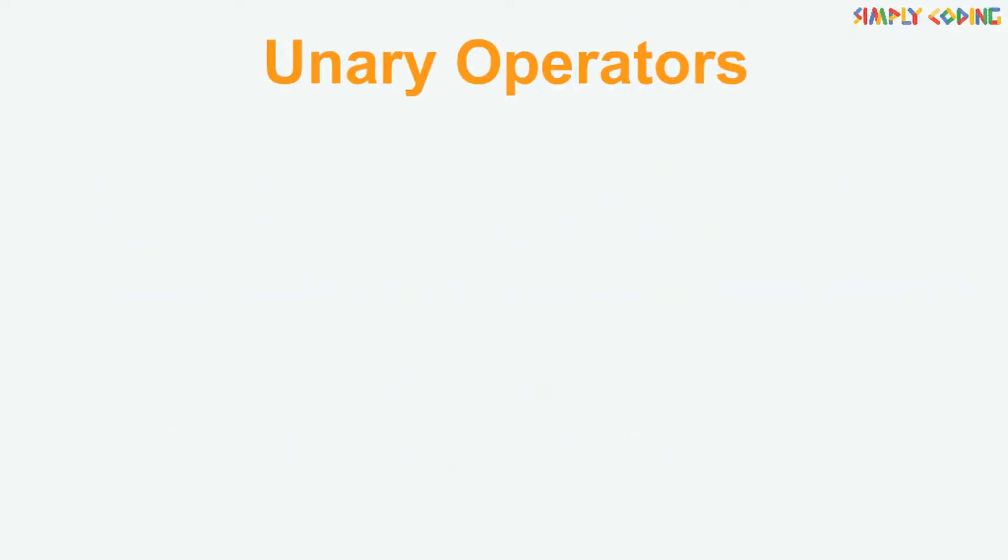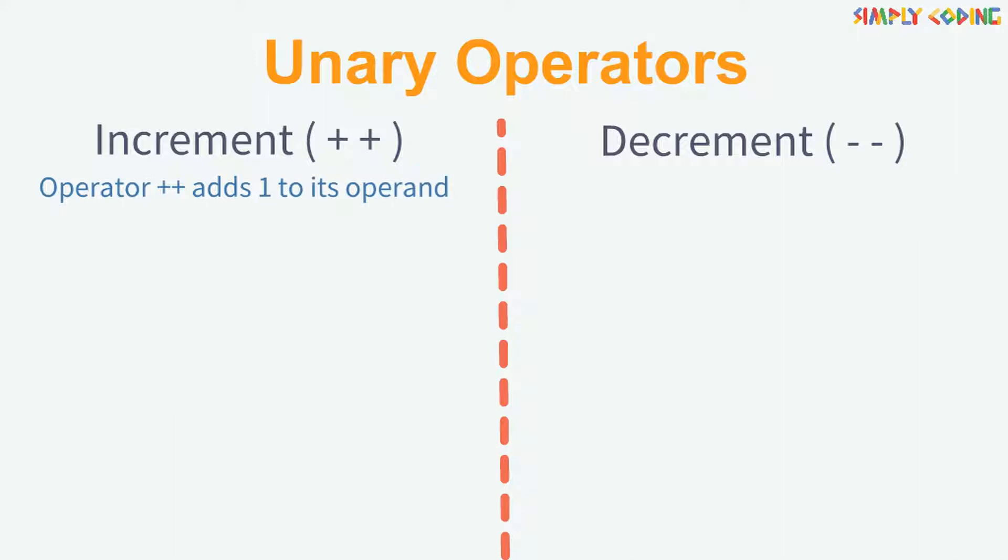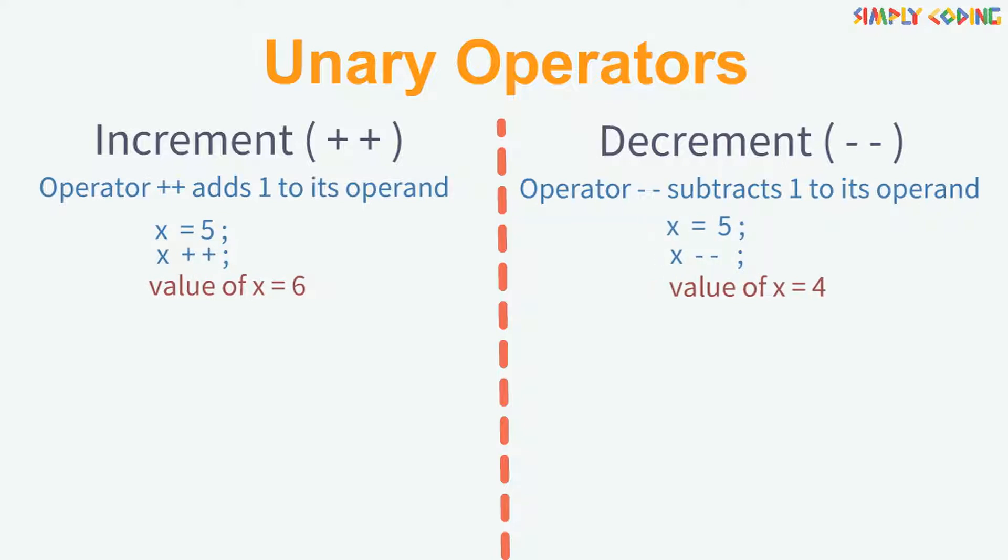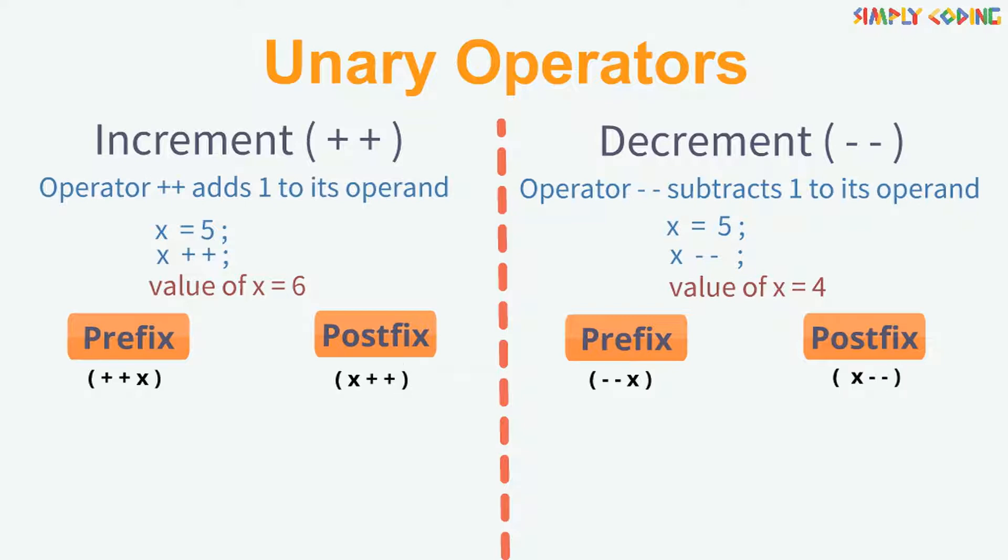Java has two unary operators, increment and decrement. Operator ++ adds one to its operand and operator -- subtracts one from its operand. Each of them comes in two variants, prefix and postfix. Prefix comes before the operand and postfix comes after the operand. Let's see this in an example.